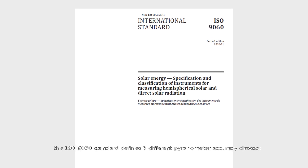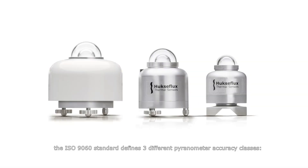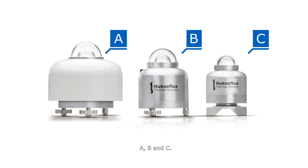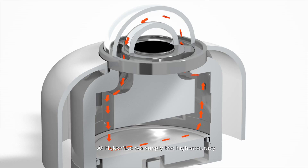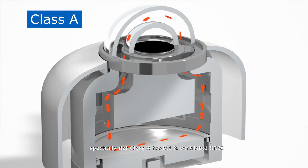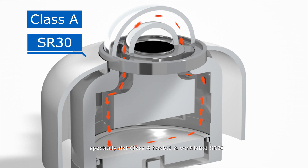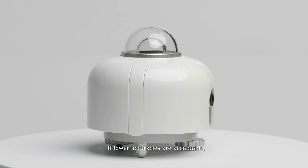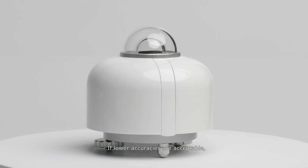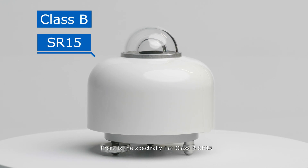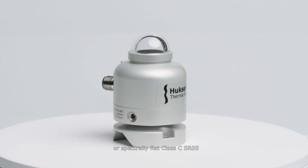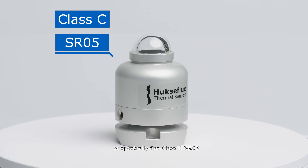To facilitate the choice of instruments, the ISO 9060 standard defines three different pyranometer accuracy classes: A, B, and C. At Huxiflux, we supply the high accuracy spectrally flat class A heated and ventilated SR30. If lower accuracies are acceptable, there is the spectrally flat class B SR15 or spectrally flat class C SR5.